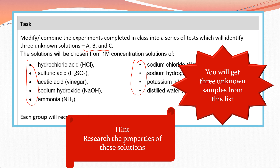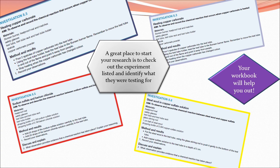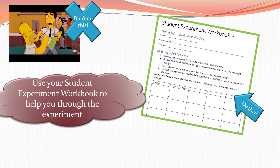You get three unknown samples and it pays to start thinking about what are the properties of those solutions that help you identify them. Think through the process - how can a clear liquid be identified? If you look at that list, some of them are acids, some of them are bases and some of them are neutral. So what would you do? You'd probably start with a pH test and then start going from there. We've done lots of different experiments and there are examples in our workbook from the text - lots of different examples of characteristic reactions. The little workbook we've given you helps quite a lot with your research and planning and writing down your results. However, that is not your final report - you have to write up your final report separately.